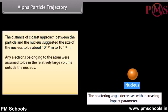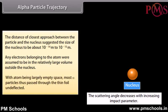Any electrons belonging to the atom were assumed to be in the relatively large volume outside the nucleus, with the atom being largely empty space. Most alpha particles thus passed through the thin foil undeflected.